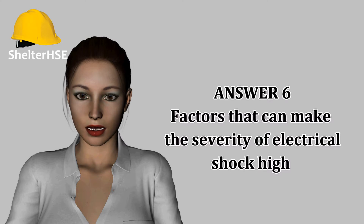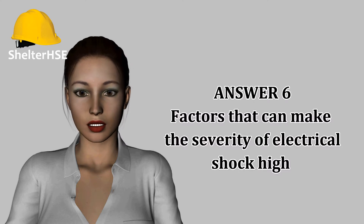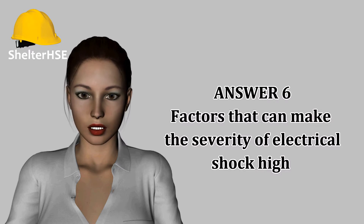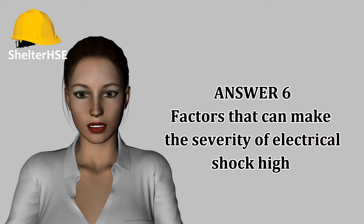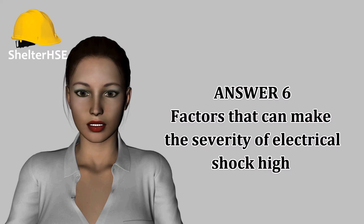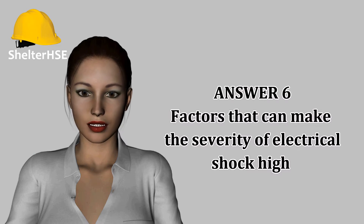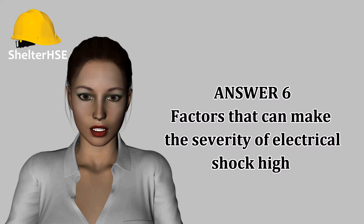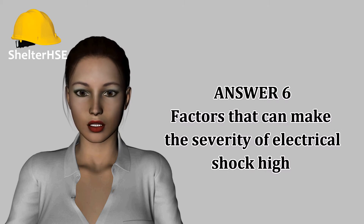Outline the factors that could make the severity of electrical shock high. Following factors can make the severity of shock high: Voltage — the higher the voltage, the greater the current and the higher the shock severity. Duration of contact — the longer the exposure, the more severe the shock. Current path — the route that electricity takes through the body; if this route passes through the heart, the shock will be severe. Frequency — if the AC current frequency is high, the shock will be severe.